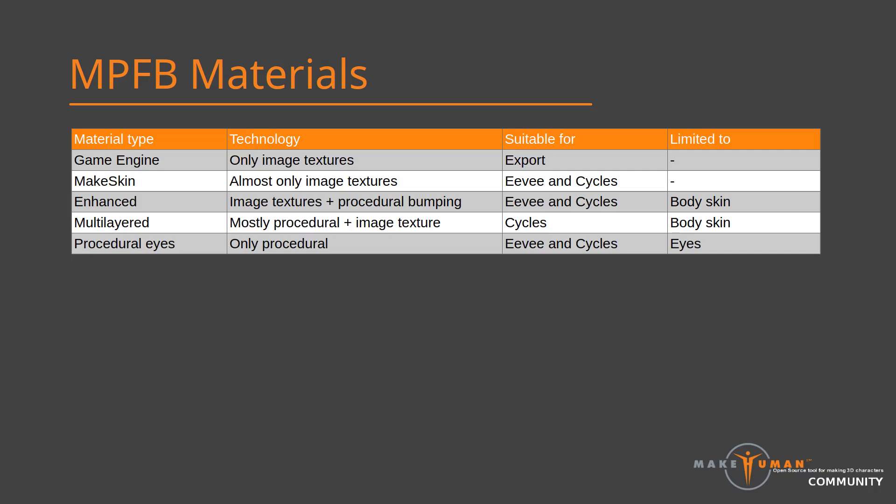Which material you want to use comes down to what you want to achieve. If your end goal is to export a character from Blender and use it somewhere else, you will most likely want to use the game engine material. If you want to render close-ups in Cycles, you might want to use the multi-layered skin model. However, using the multi-layered model in combination with EEVEE will probably cause Blender to freeze or at least become very sluggish. The later videos in the series will go into more detail about the various material models.